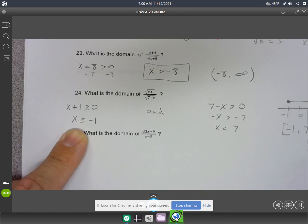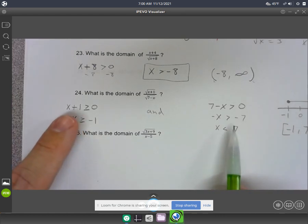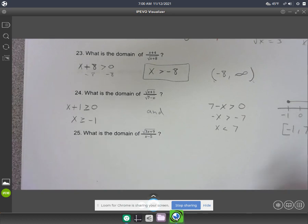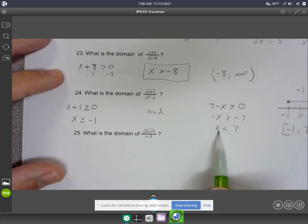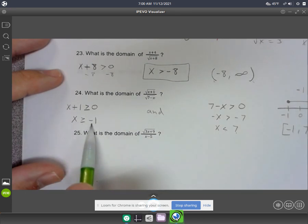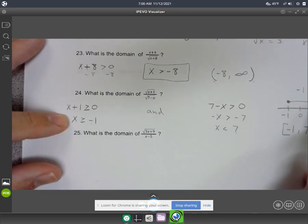And then the other way, if you wrote this compound inequality, I don't know if it has a name, but if you wrote it the other way, it would be negative 1 is less than or equal to x is less than 7. All right, x is less than 7. That's that half. And then x is greater than negative 1. That's this half, but you have to kind of read it backwards.